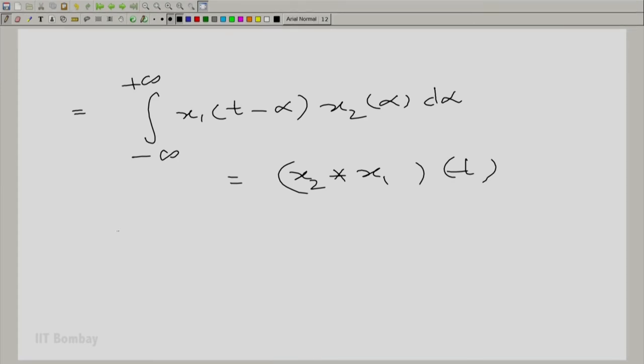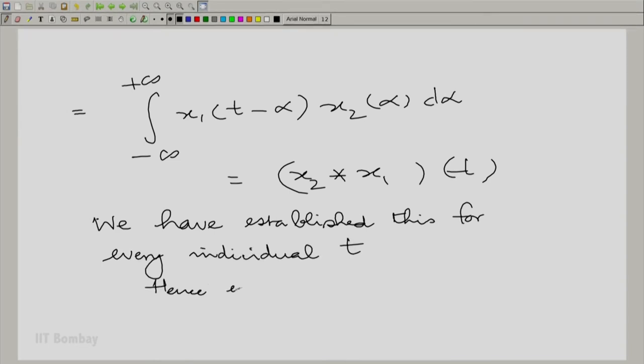Since this is true for every t, it is quite clear that convolution is commutative. We have established this for every individual t. Hence, x_1 convolved with x_2 is the same as x_2 convolved with x_1 for all t. Proved.